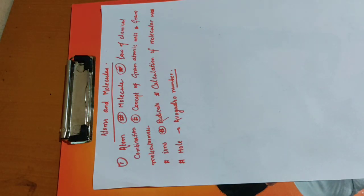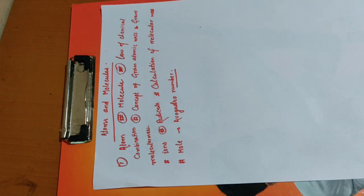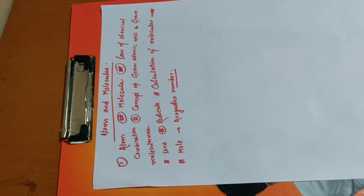All these topics are related to physical chemistry. Chemistry is actually divided into 3 parts: physical, inorganic, and organic. In organic chemistry, we study elements related to carbon and their compounds. So let's start our chapter - Atoms and Molecules - from the beginning, that is, the atom.